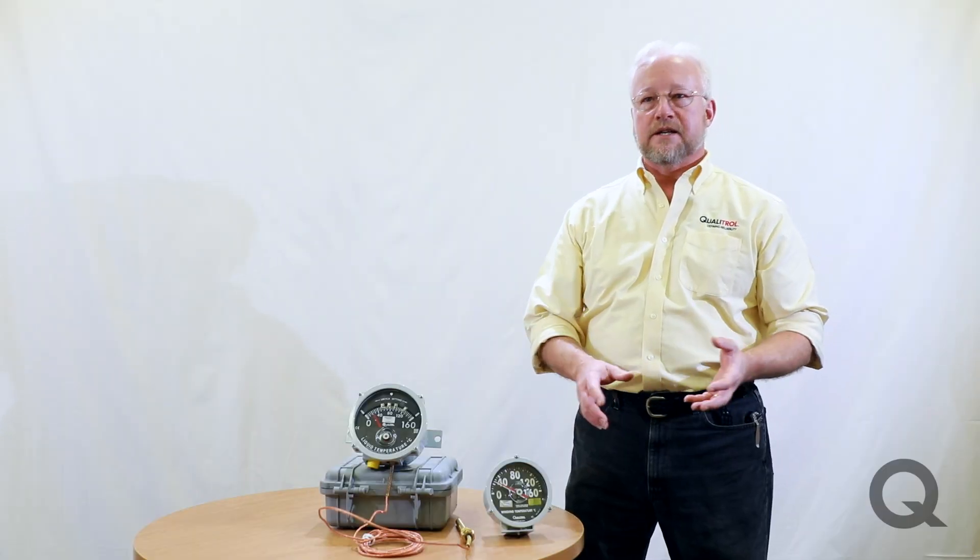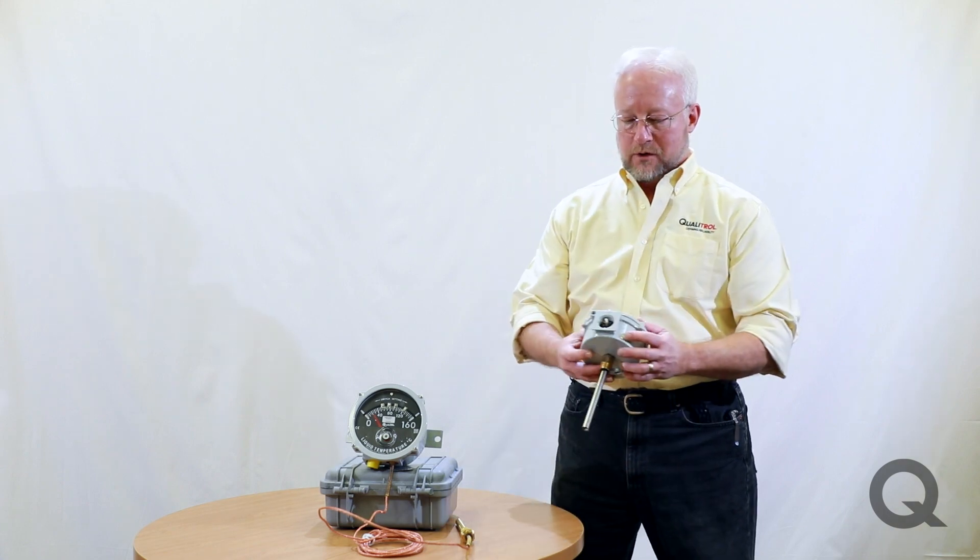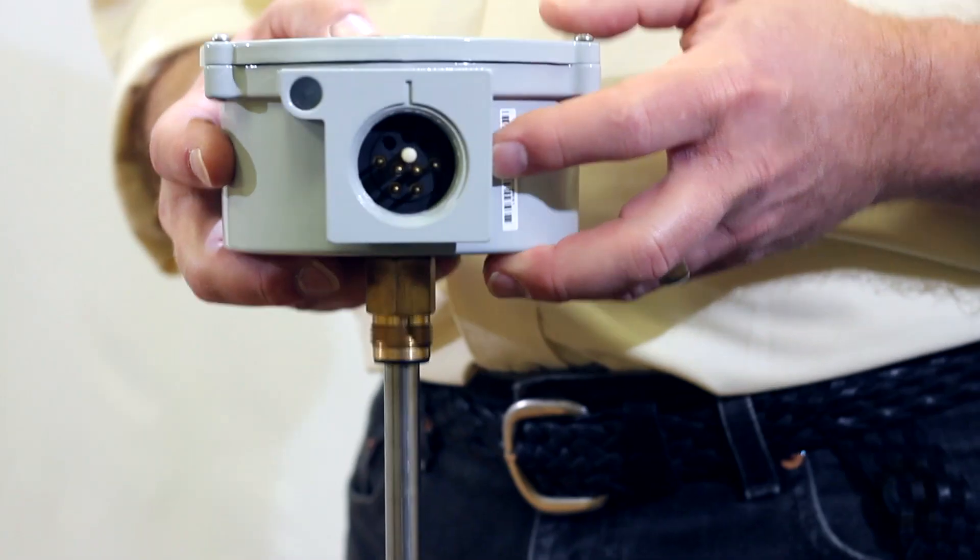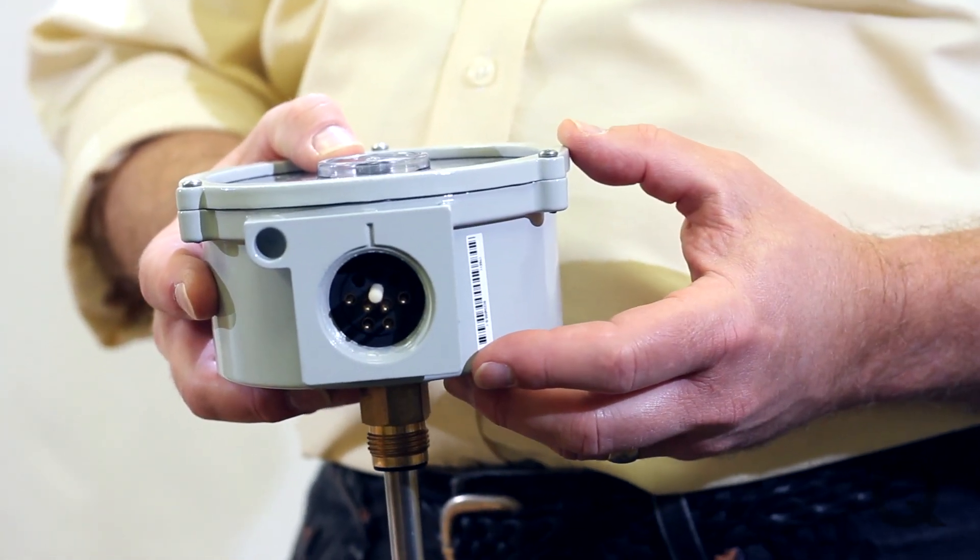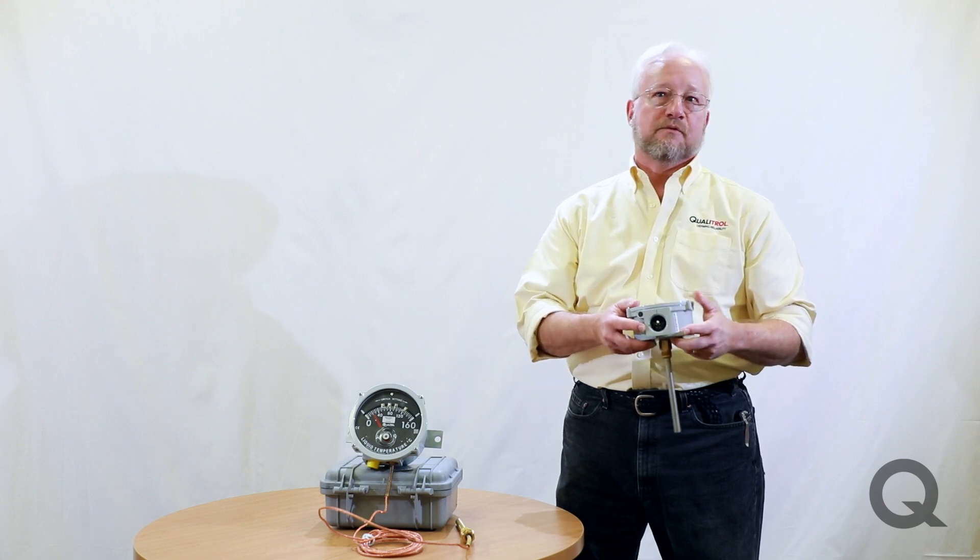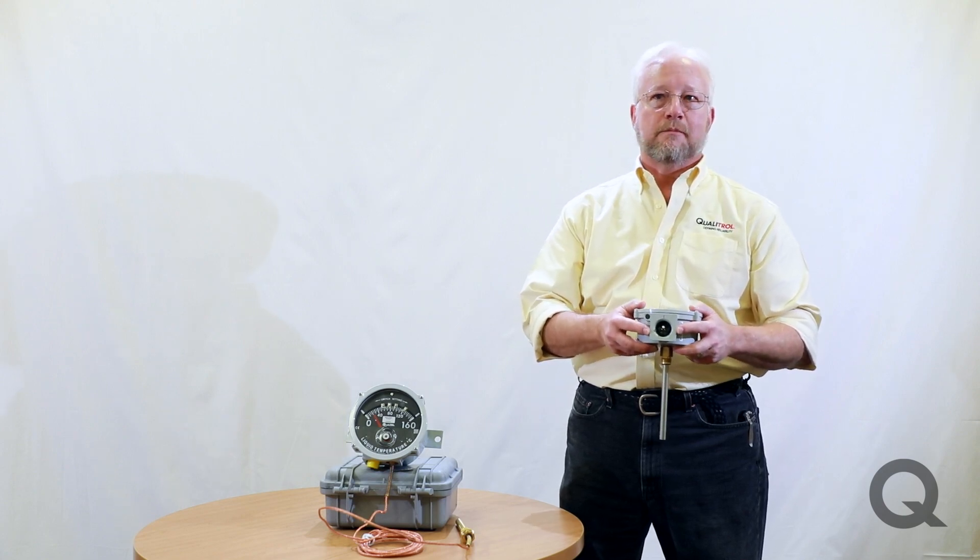And then the actual way to tell whether you've got form A or form C is you look at the bottom of the connector output and you can count the pins. If you've got one switch and you've got two sets of pins, then that's form A. If you've got three sets of pins, that's going to be a form C.